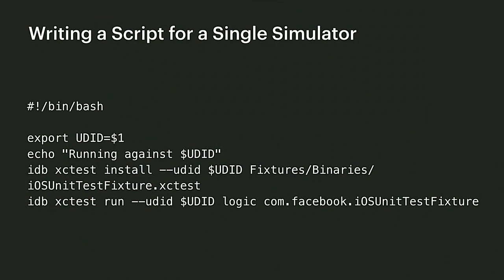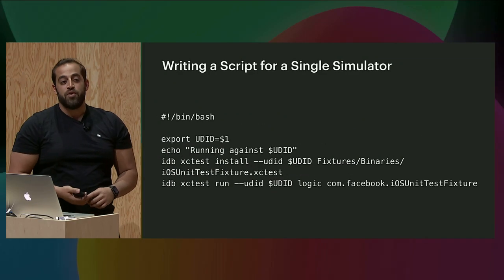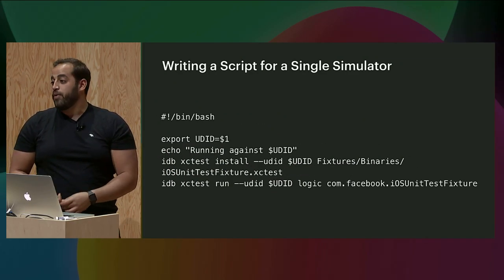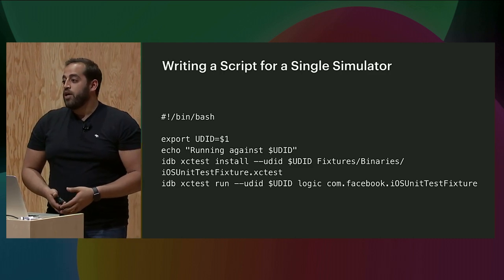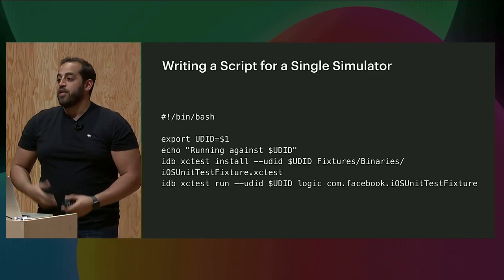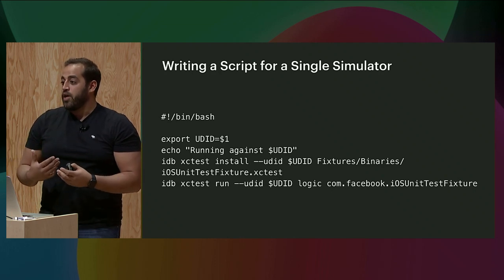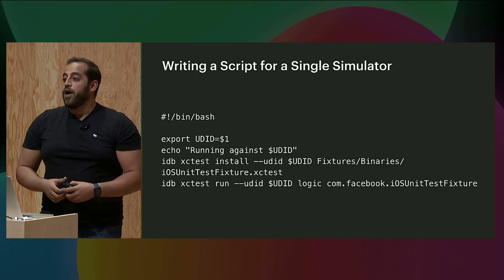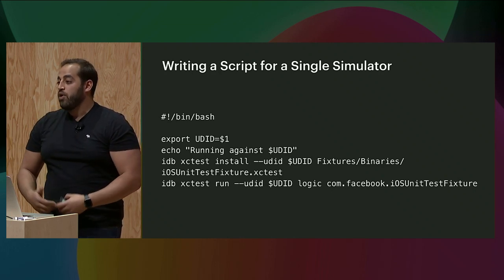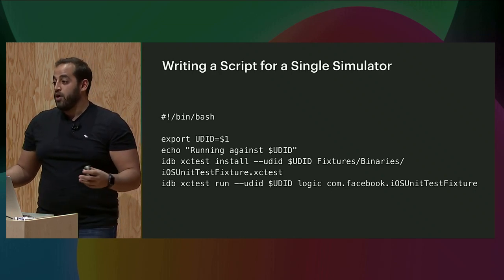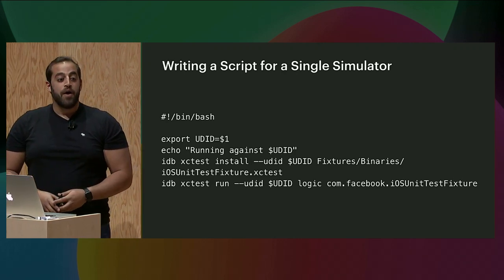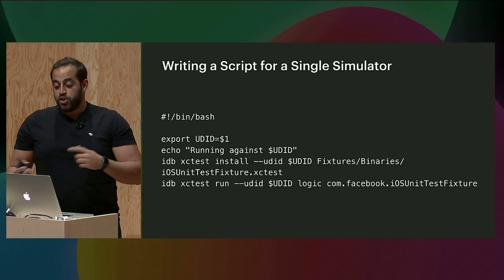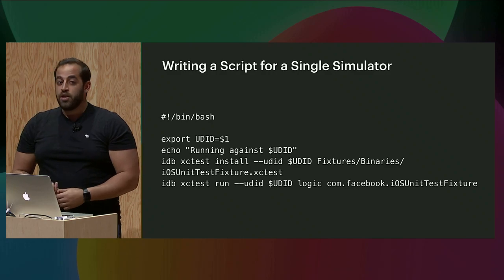Now I want to show you how to take it one step further and use it for actual automation. We can write a simple bash script that takes a UDID as the only variable, and then run the same test bundles on three different simulators at the same time. Let's switch back to demo and see how we can do this.